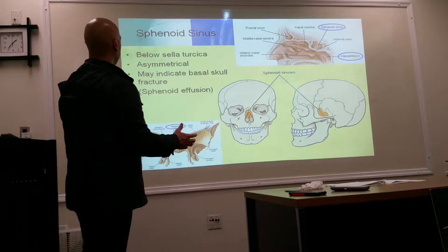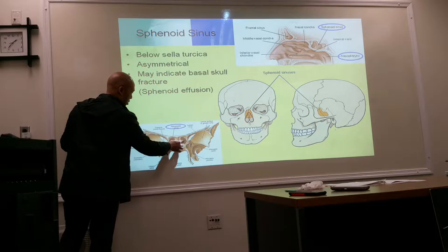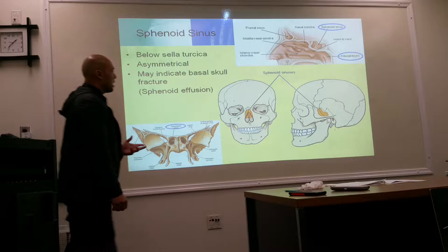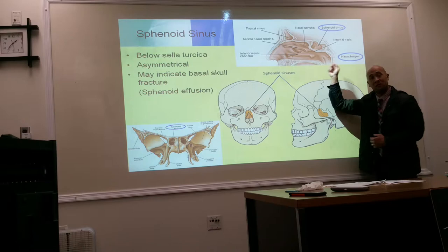The sphenoid sinus is located below the sella turcica and can be asymmetrical. In a cross-section of the sphenoid bone you will find the sinuses. When you see fluid collecting in the sphenoid, that is usually an indication of some kind of basal fracture.